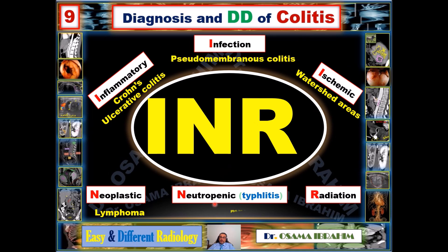Neutropenic colitis, also called typhlitis, occurs at the ascending colon in immunocompromised patients — those receiving radiotherapy or with any cause of immune compromise. Thumb printing at the ascending colon in such patients suggests typhlitic colitis. Radiation colitis occurs based on the history of radiation; for example, radiation to the prostate or cervical cancer involving the pelvis can cause thumb printing at the rectosigmoid area. Thus, the site of thumb printing helps discriminate the cause.